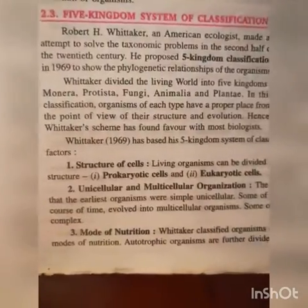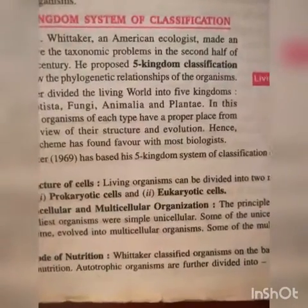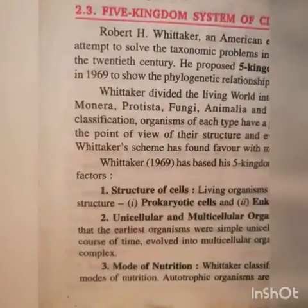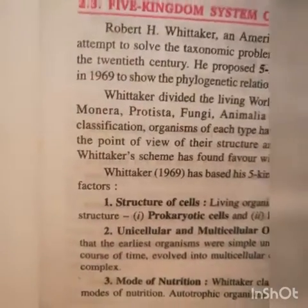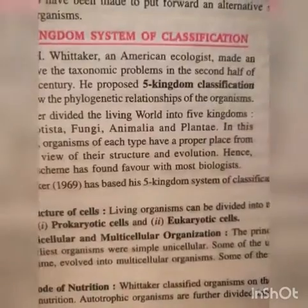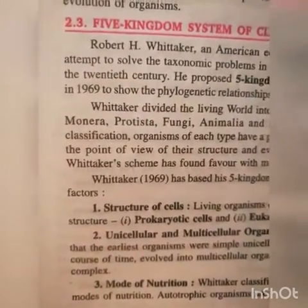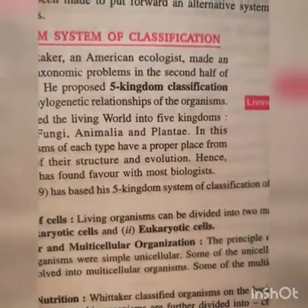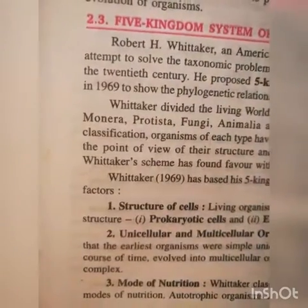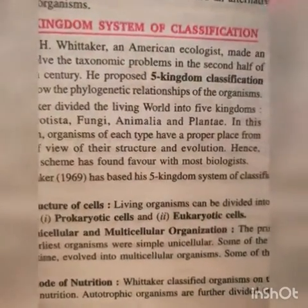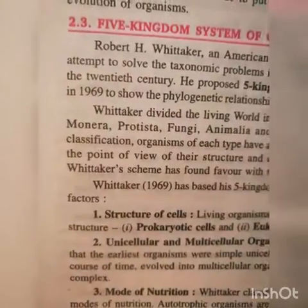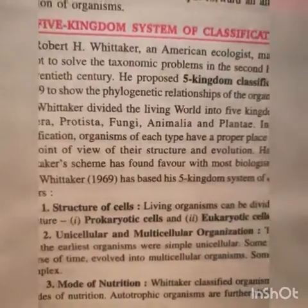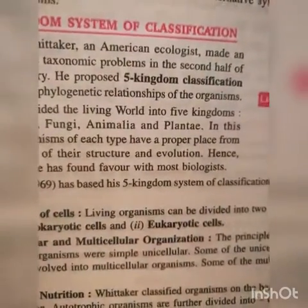Whittaker divided the living world into five kingdoms: Monera, Protista, Fungi, Animalia, and Plantae. In this classification, organisms of each type have a proper place from the point of view of their structure and evolution. Hence, Whittaker's scheme has found favour with most biologists.